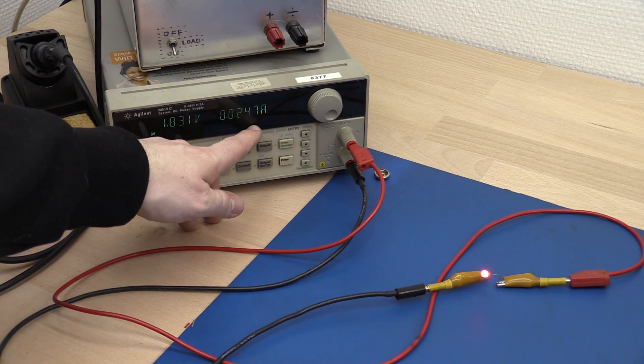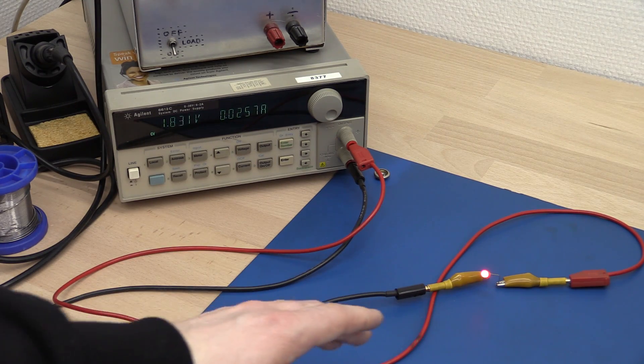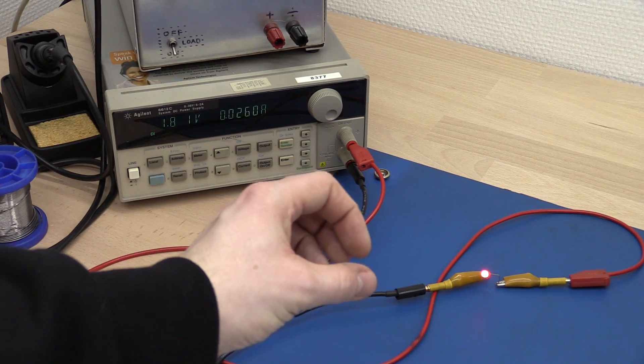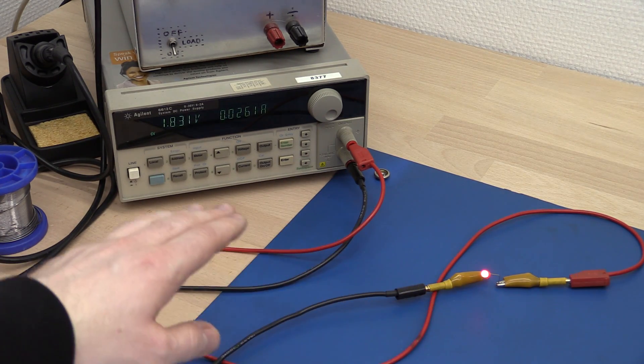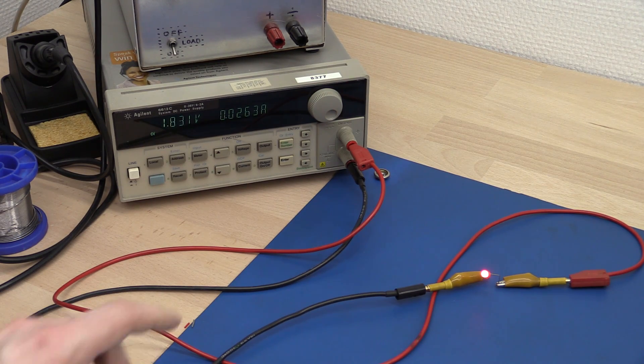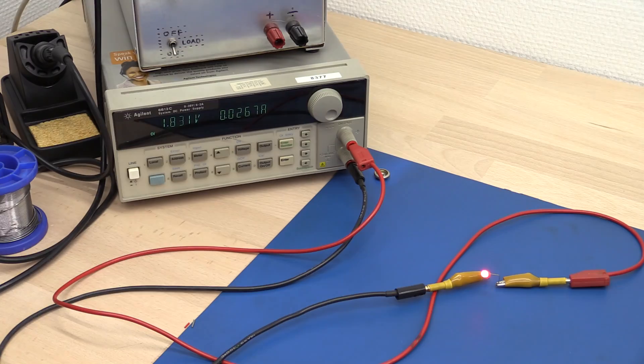But, you can see already we have a problem. Just a slight heating from this power dissipation. It heats up the die ever so slightly, and the current just goes up. You can see we started at 20 milliamps, now we are already at 26.5.